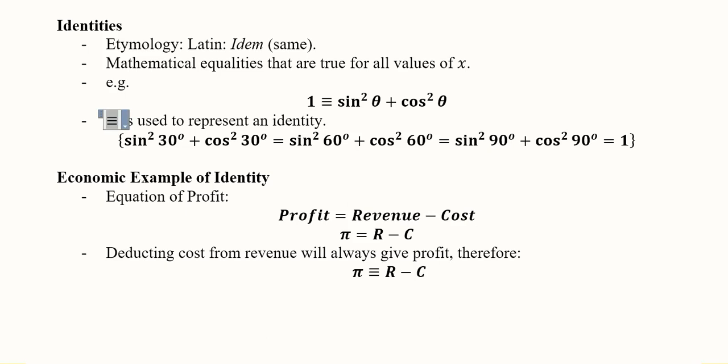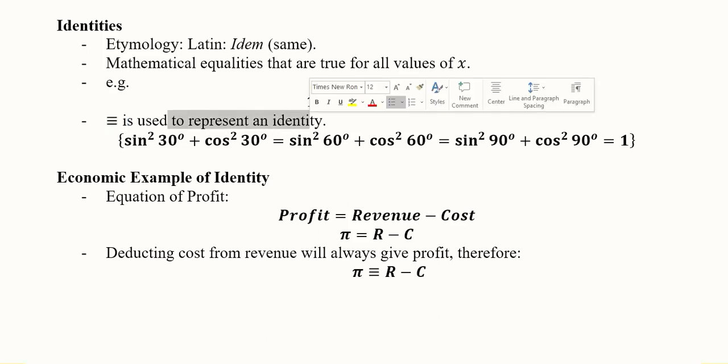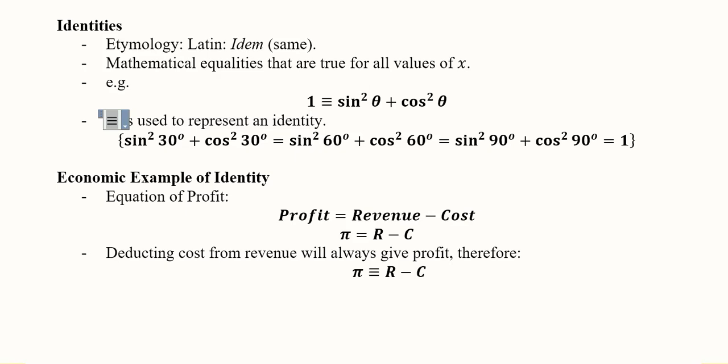So the three-bar equality ≡ is used to represent an identity. We can experiment with 30 degree angle, 60 degree angle, 90 degree angle. The answer will always be equal to 1.